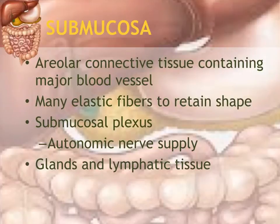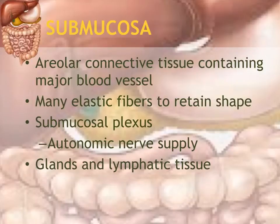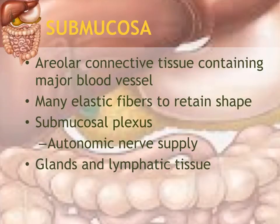The next layer out from the mucosa is the submucosa. It is mainly made up of areolar connective tissue and contains major blood vessels. It also has the submucosal plexus for nerve supply, and contains many elastic fibers to keep its shape — important so the intestine doesn't bulge and lose its ability to move food along. It also contains glands and lymphatic tissue for immune function and mucus secretion.